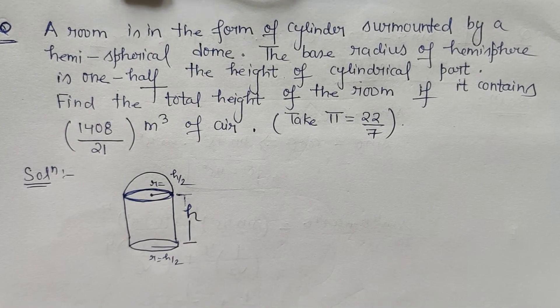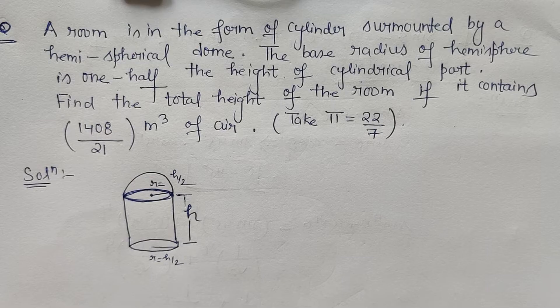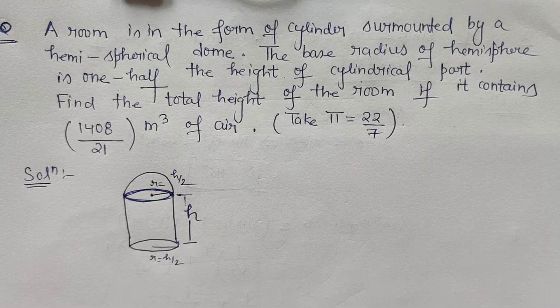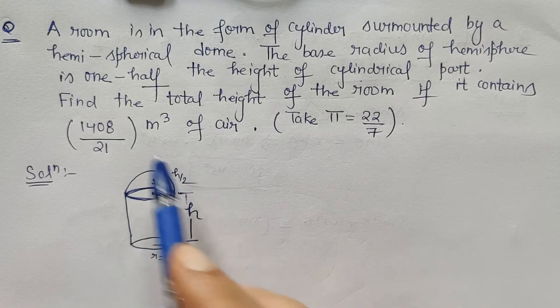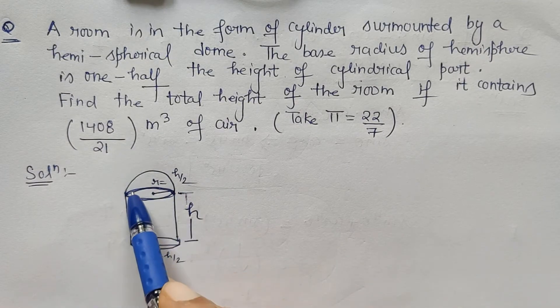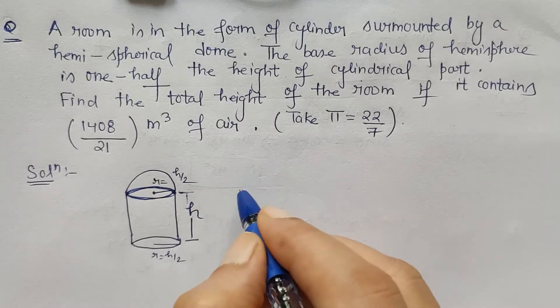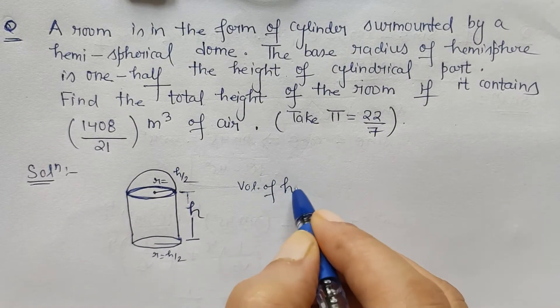Now we have to find the total height of the room if it contains 1408 by 21 meter cube of air. That means the complete volume of this room is given to us, which is the combination of hemisphere and cylinder.